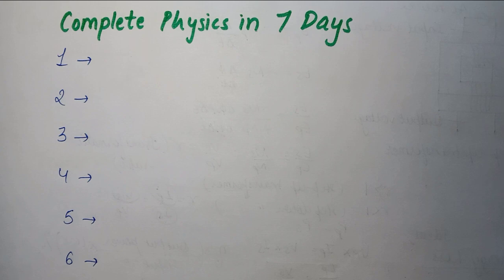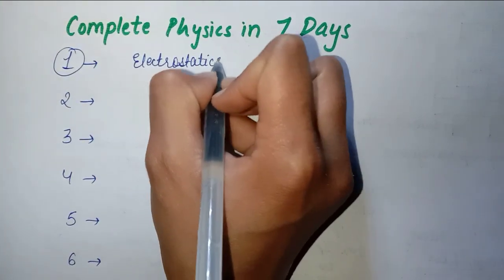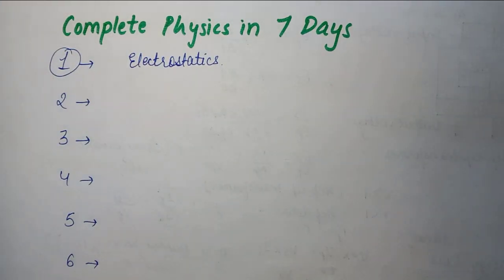So look, first of all, which chapter you can take in the seven days. Total is 14 chapters, six days you will complete your chapters. First of all, you will complete electrostatics. You have two chapters - electric fields and charges, and electric potential and capacitance. So first day you will complete it easily, it is not much difficult.